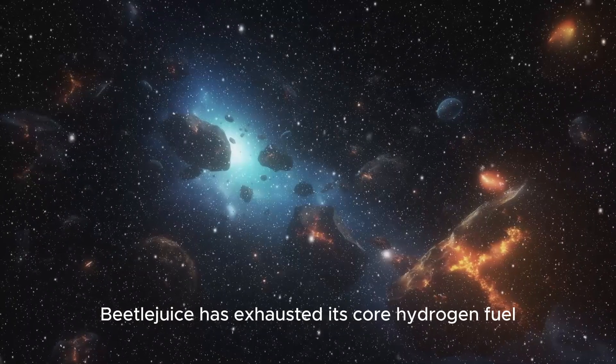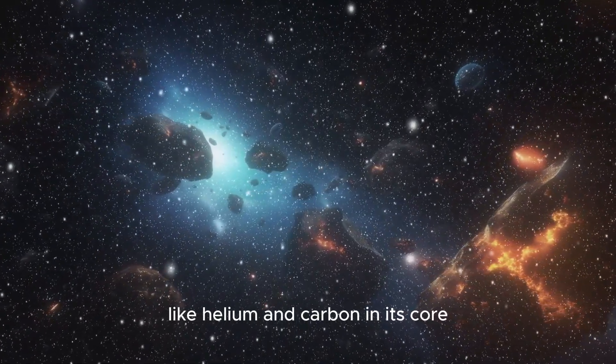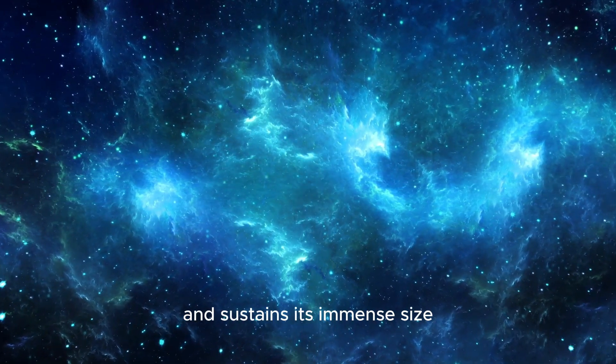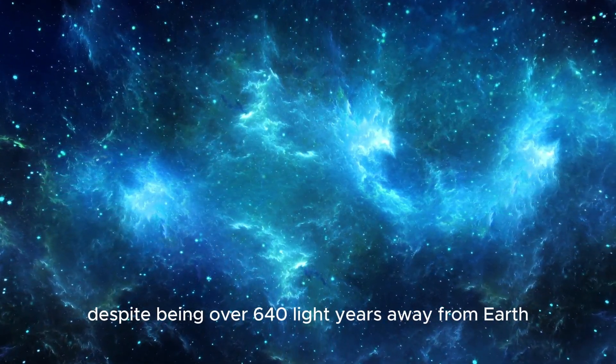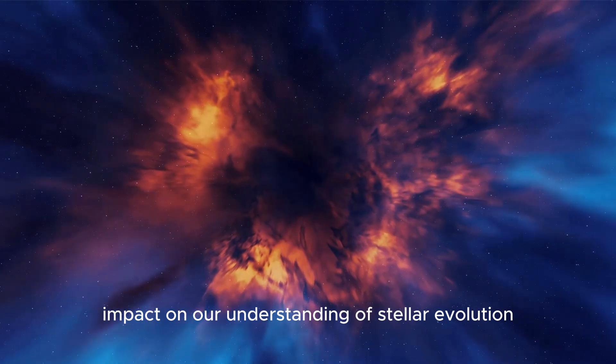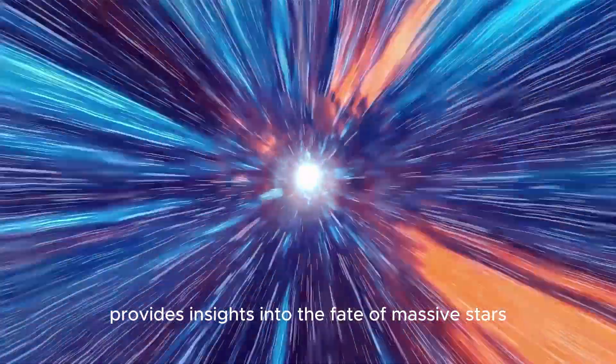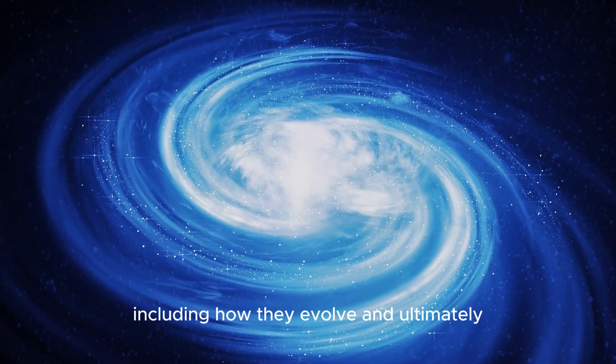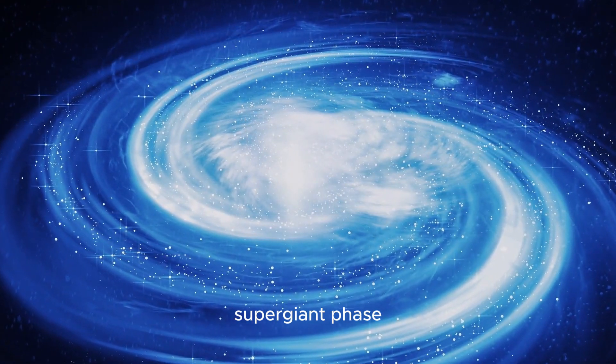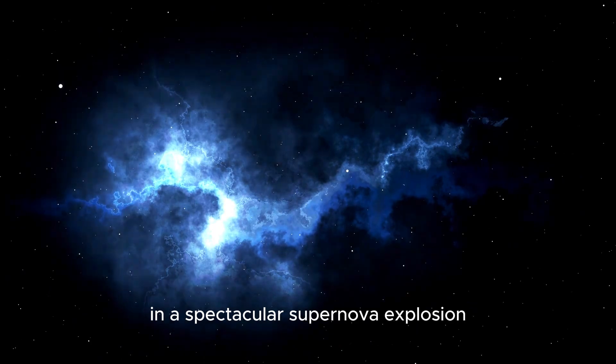Betelgeuse has exhausted its core hydrogen fuel, leading to the fusion of heavier elements like helium and carbon in its core. This nuclear fusion process generates the energy that powers the star and sustains its immense size. Despite being over 640 light years away from Earth, Betelgeuse's impact on our understanding of stellar evolution is profound. Studying Betelgeuse provides insights into the fate of massive stars, including how they evolve and ultimately end their lives. While Betelgeuse is currently in its red supergiant phase, astronomers anticipate its eventual demise in a spectacular supernova explosion.